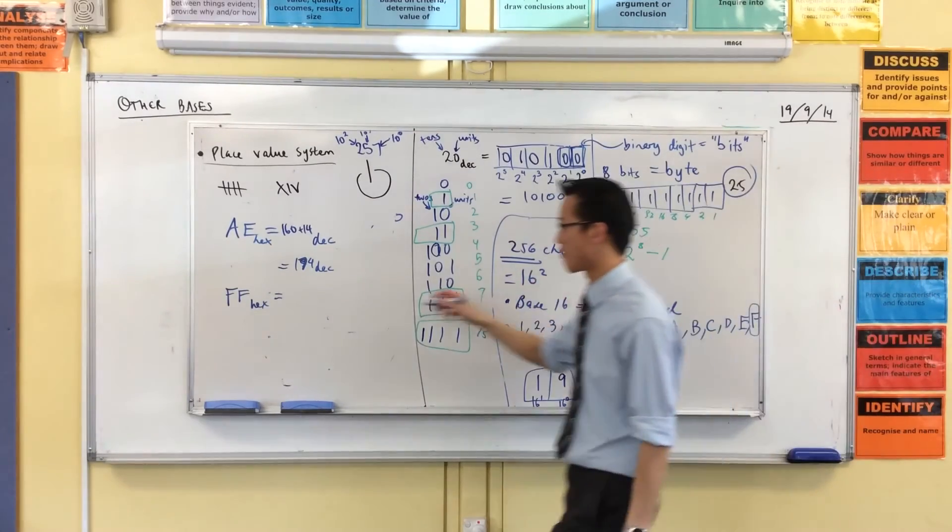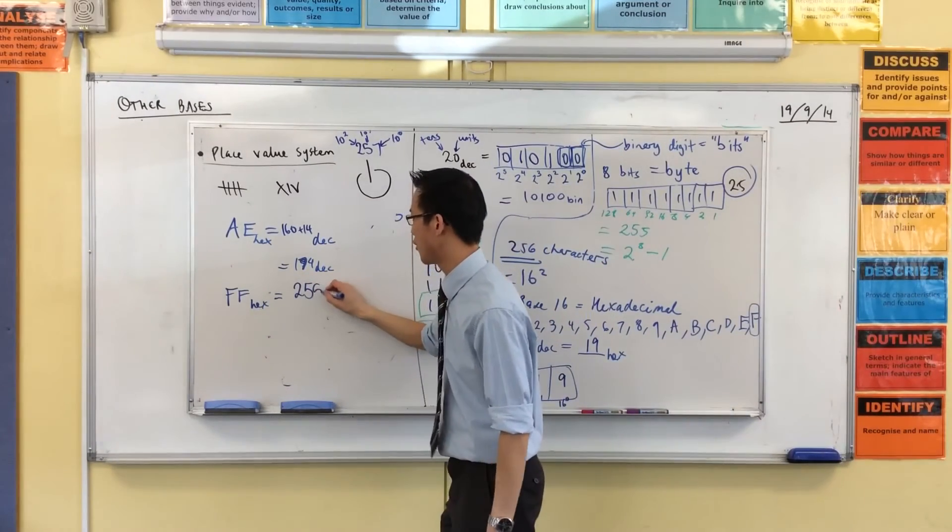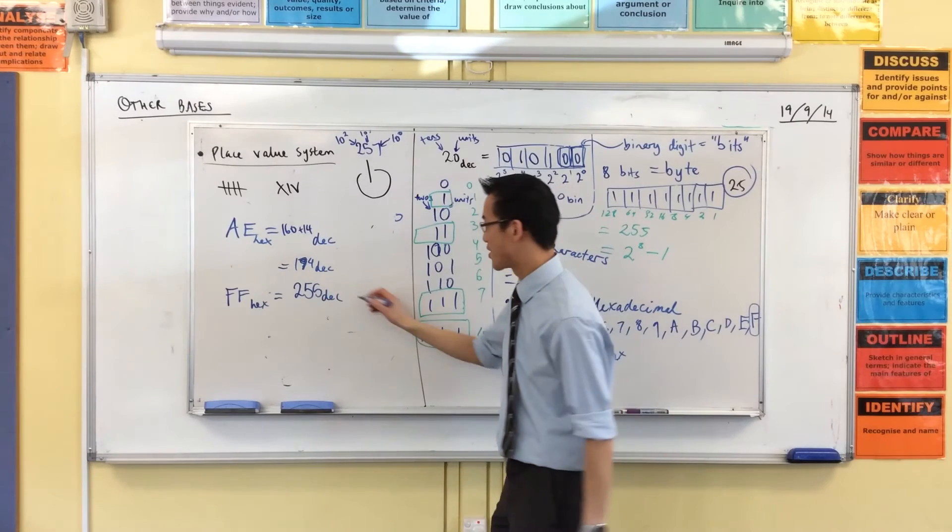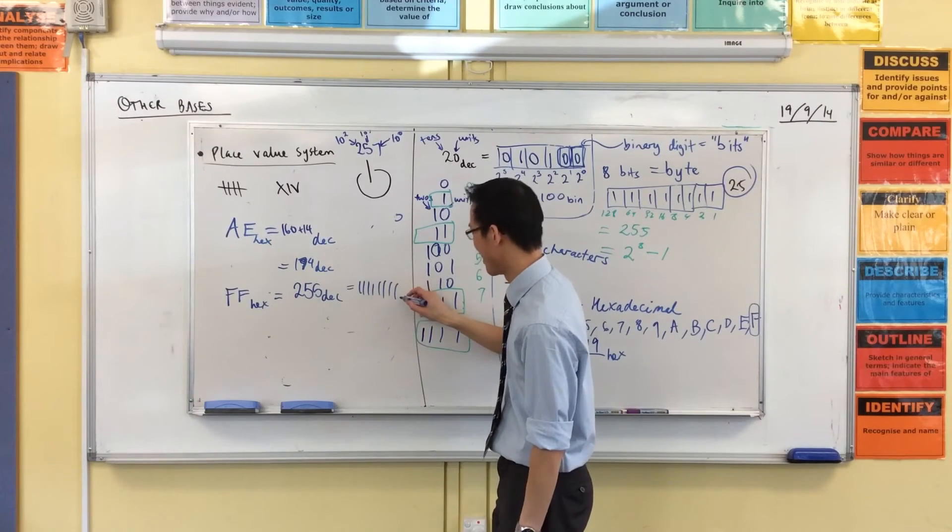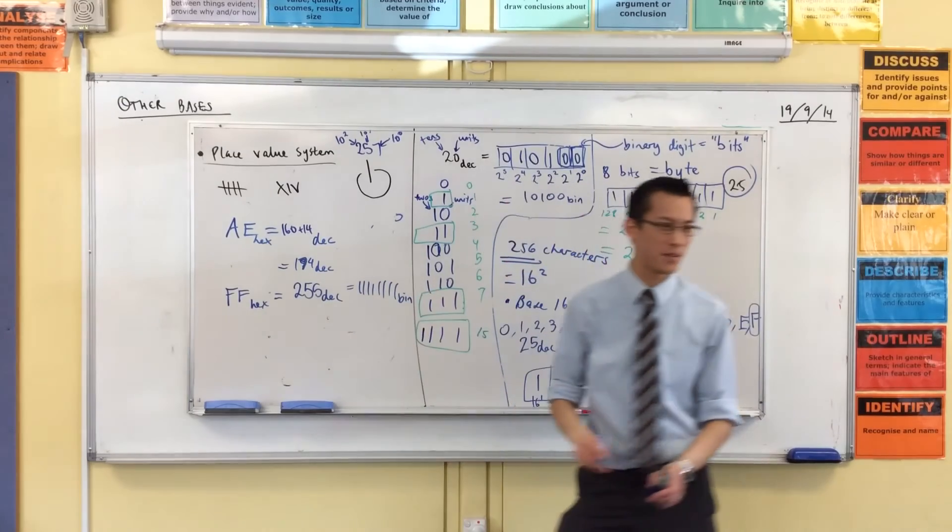FF, that's the biggest digits I have. And like we established before, it's going to be this number, right? 255 in decimal, which is 11111111 in binary.